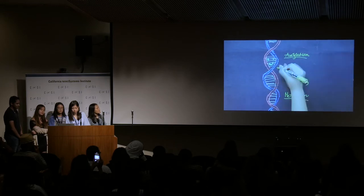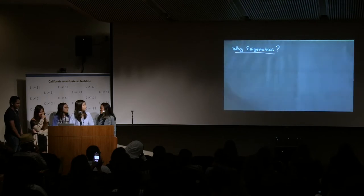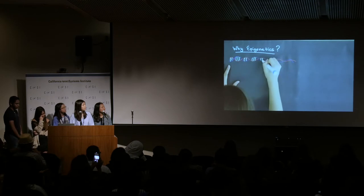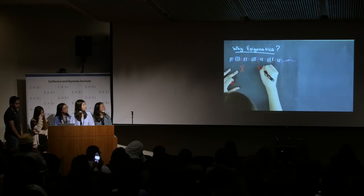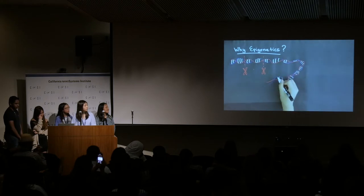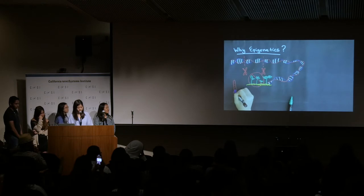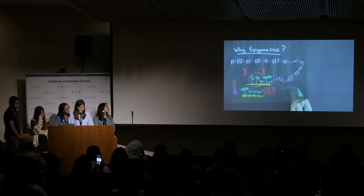Acetylation basically puts a tag on a gene saying 'read me,' while methylation puts a tag saying 'don't read me.' You may be wondering, why epigenetics? What if we just cut out the unimportant genes entirely? Well, if we permanently cut specific genes out, it'll prevent plants from having genetically diverse offspring. Also, if the climate is stabilized in the future, we won't be able to reverse permanent gene alterations. That's why epigenetics is a safer choice.